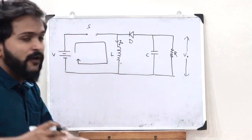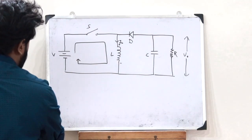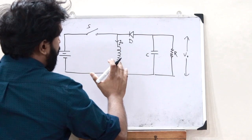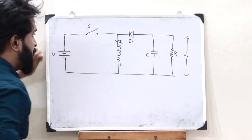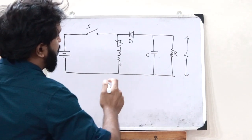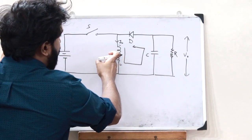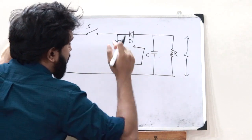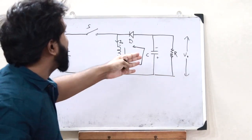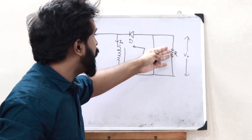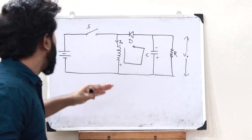Now when the switch is turned off, current will no longer flow in the previous loop. The polarity across the inductor gets inverted — this side becomes plus and this becomes minus. As a result, current starts flowing through the other loop toward the capacitor, the inductor provides a potential difference to charge the capacitor, and it is this capacitor that then provides the output voltage to the load resistor.